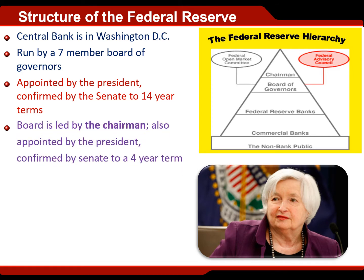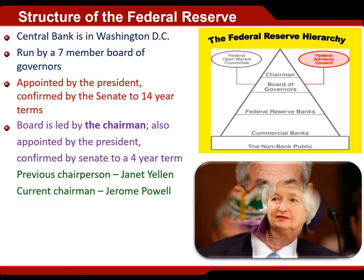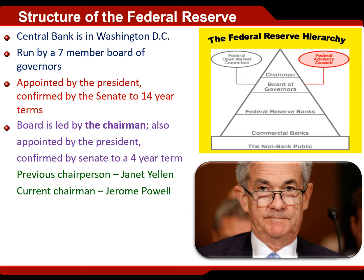The board is led by one person called a chairman. Pretty recently we had a chairwoman. Just like other members of the board of governors, they are appointed by the president and confirmed by the Senate, but they only get to serve four years in office. The previous chairperson was Janet Yellen — she was a very good Fed chair and oversaw a very prosperous time in our economy. She was replaced in 2018 by the current Fed chair, Jerome Powell. He was a member of the board of governors while she was chair, and he was President Trump's choice to succeed her.